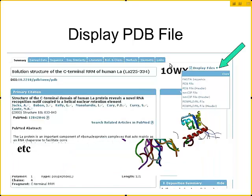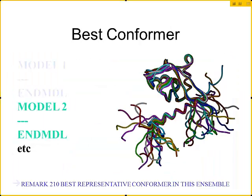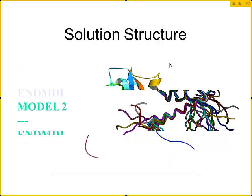You can display your PDB files to get this information. If you search through, you can find a specific REMARK line — we won't take the time to do that today — but that REMARK line will tell you that the best conformer in this ensemble is Model 1.